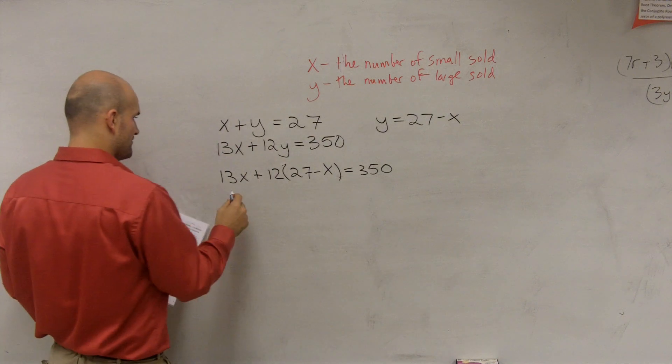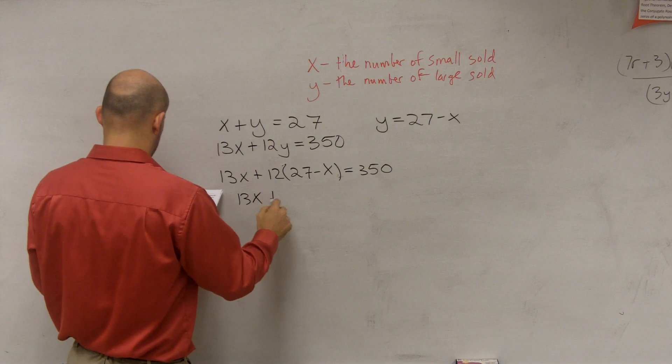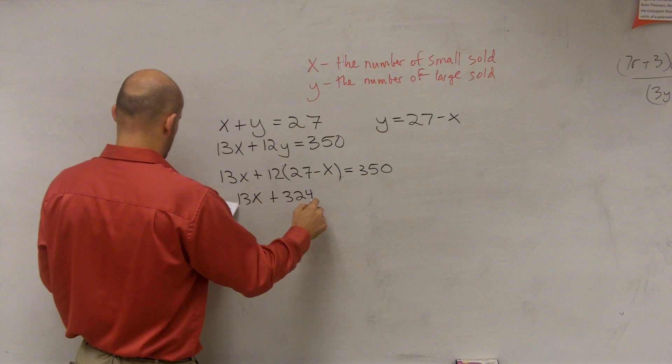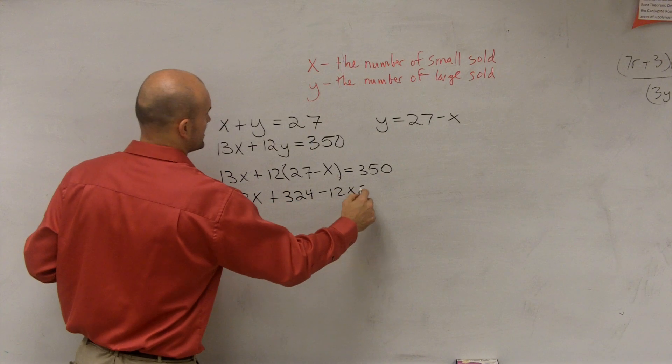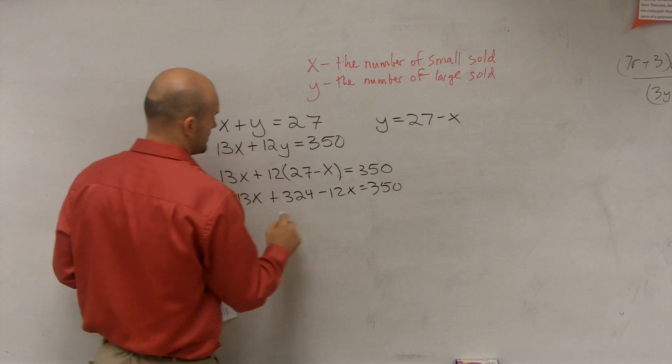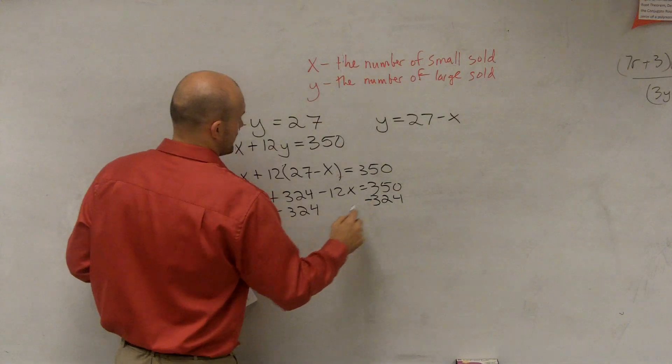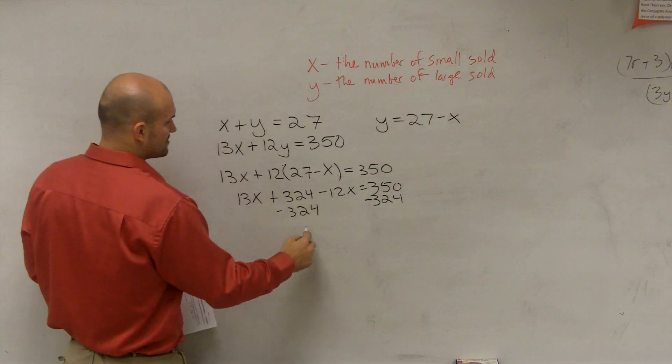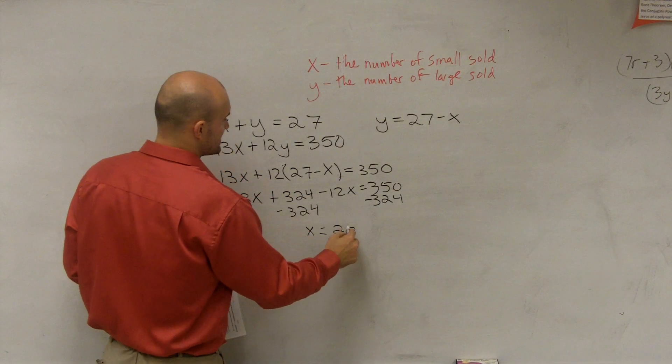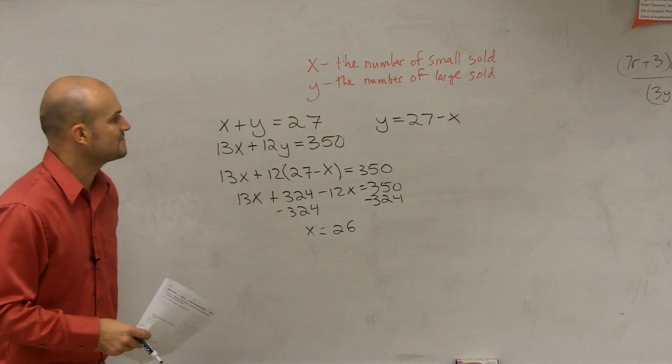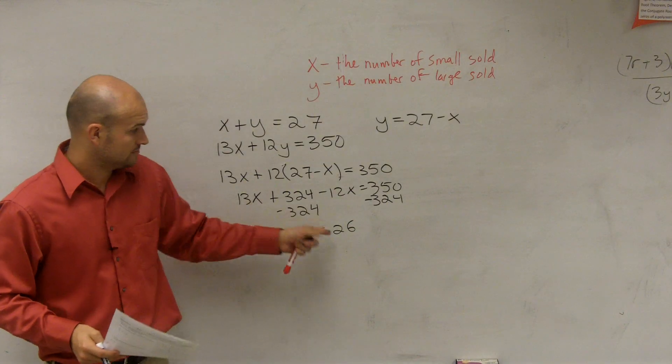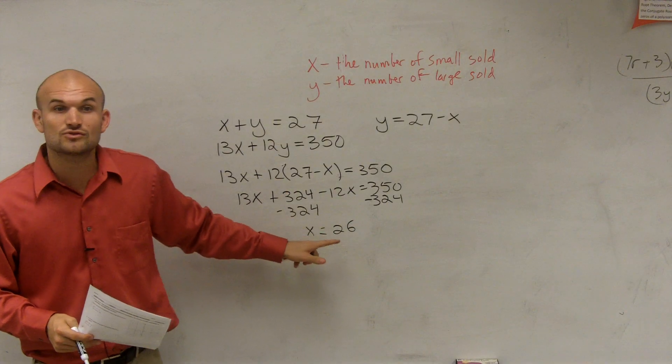Good. So therefore, I get 13X plus 324 minus 12X equals 350. Subtract 324. And then what happens is you combine like terms. You get X equals 26. So therefore, the number of small stuffed animals is X equals 26.